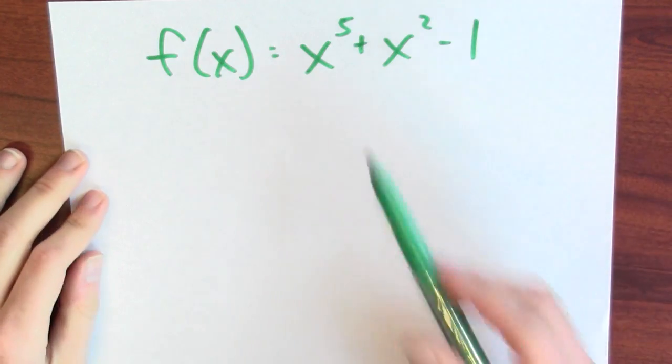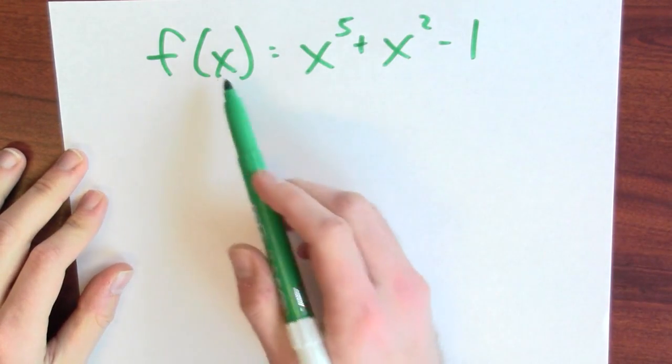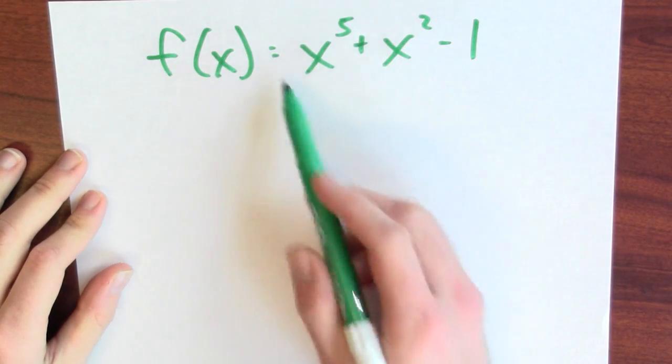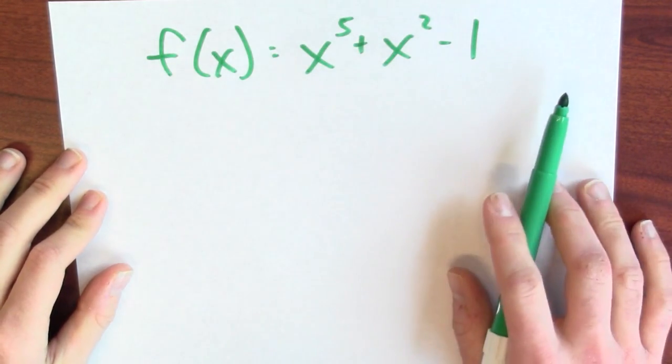Now, just for fun, I'd like to know a root of the polynomial x to the fifth plus x squared minus 1. So here's the function where I want to find a root. I want to find some input that makes this function equal to 0.